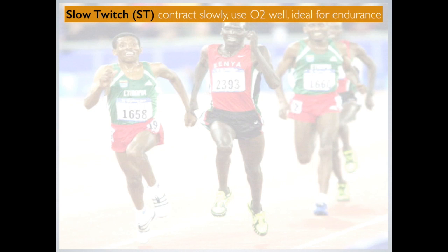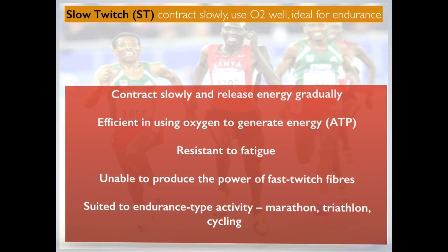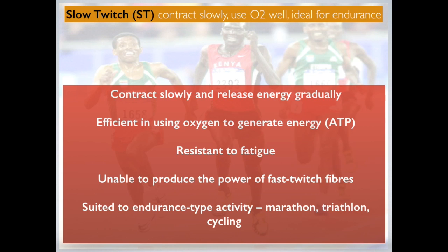Slow twitch fibres contract slowly, use oxygen well, and are ideal for endurance. They contract slowly and release energy gradually. They are efficient in using oxygen to generate energy and ATP, and they are resistant to fatigue — so it takes a long time to fatigue them. They are unable to produce the power of fast twitch fibres, but they are suited to endurance-type activities such as marathon, triathlon, and cycling.